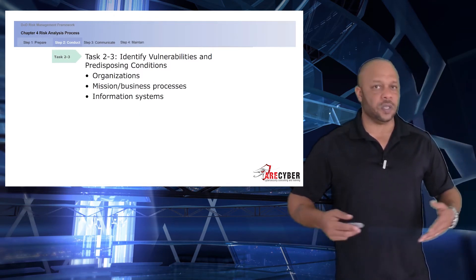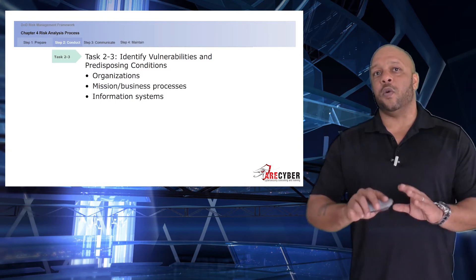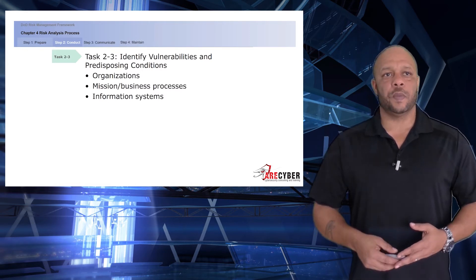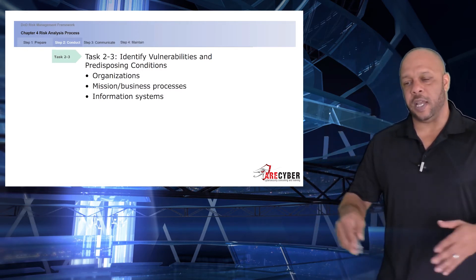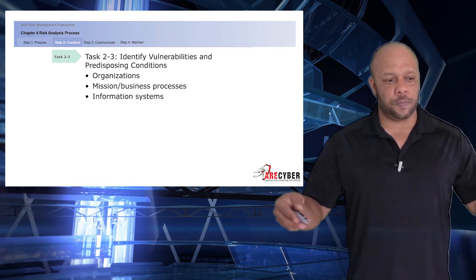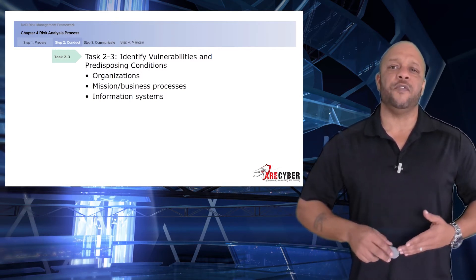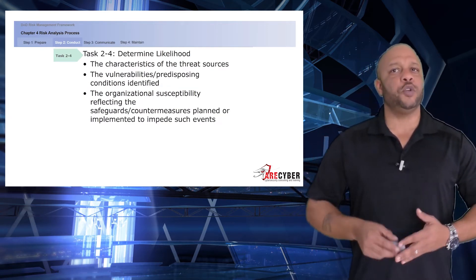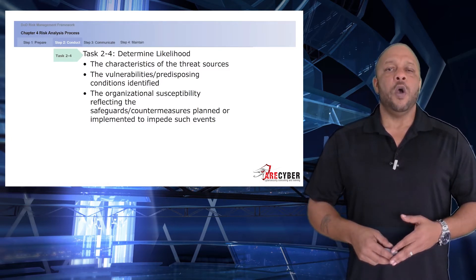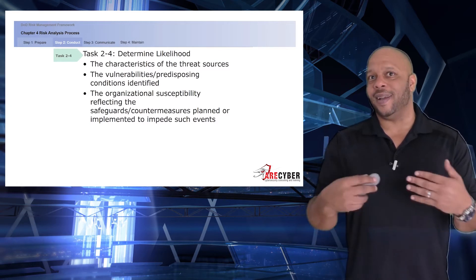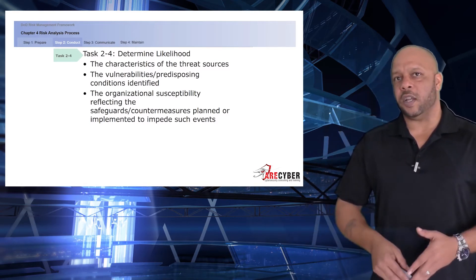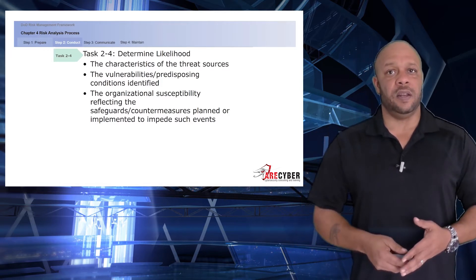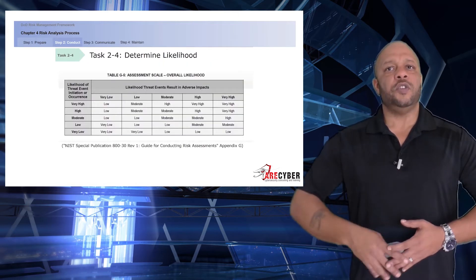Next, identify vulnerabilities and predisposing conditions. This will be set by the organization itself, the mission and business processes, and the information system — identified throughout the organization, the specific mission and business processes, as well as the information system itself. Then determine the likelihood based on the characteristics of the specific threat sources and the vulnerability conditions identified against the information system. What is the organizational susceptibility reflecting the safeguards and countermeasures planned or implemented to impede these events?